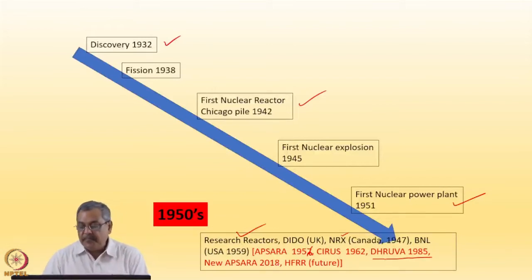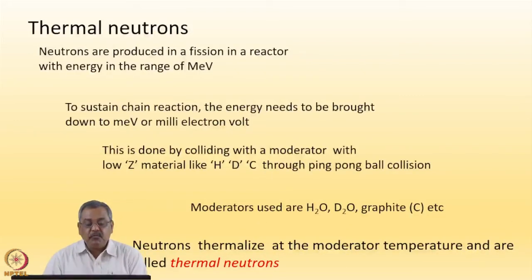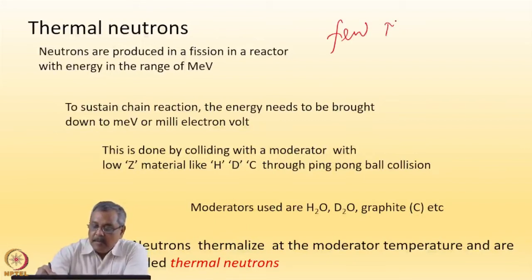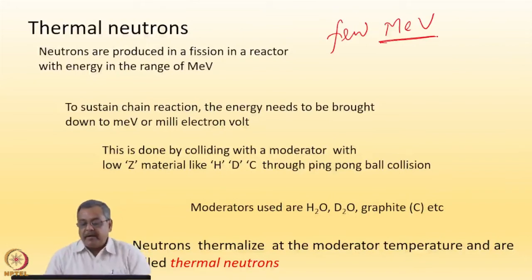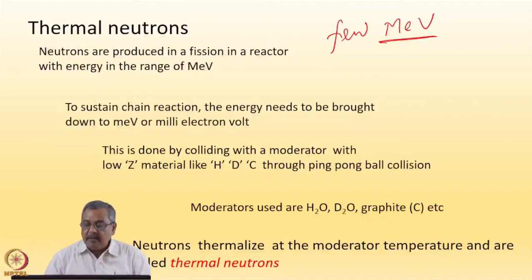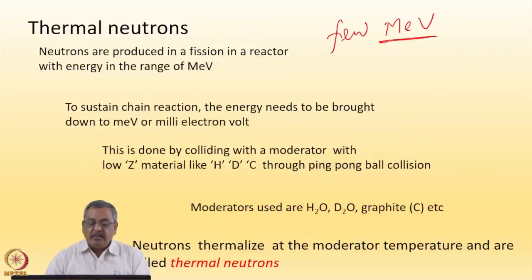This research is mostly done using thermal neutrons, which are available in the core of a reactor. Neutrons are produced in fission at energies of a few million electron volts. To keep a reactor critical — meaning sustaining a chain reaction from generation to generation with the same number of neutrons, neither increasing nor decreasing — the neutron energy has to be brought down to the thermal range. This is known as a critical reactor.